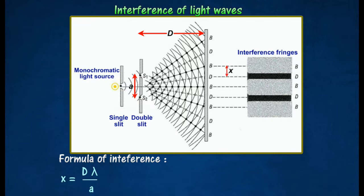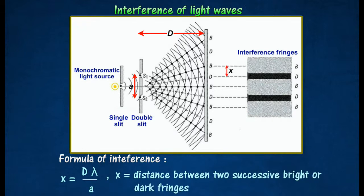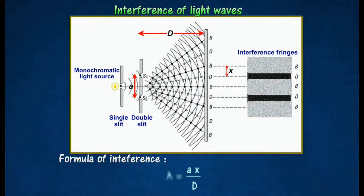By using a ruler to measure the fringe separation X between two successive bright or dark fringes, the wavelength of the monochromatic light can be calculated as follows.